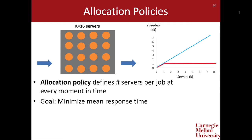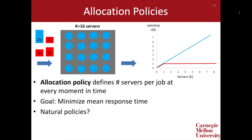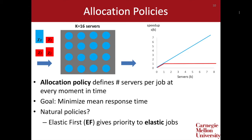We might imagine some set of jobs has arrived — for example, one elastic job and three inelastic jobs. One natural policy is to allocate all 16 servers to the elastic job since it is perfectly parallelizable. We'll refer to this policy, which gives priority to elastic jobs first, as Elastic First or EF. Analogously, we might instead give priority to each inelastic job. Because each inelastic job can only utilize at most one server, we allocate one server to each of the three inelastic jobs and use the leftover idle servers to run the elastic job. This policy, which gives priority to inelastic jobs, we'll call Inelastic First or IF.